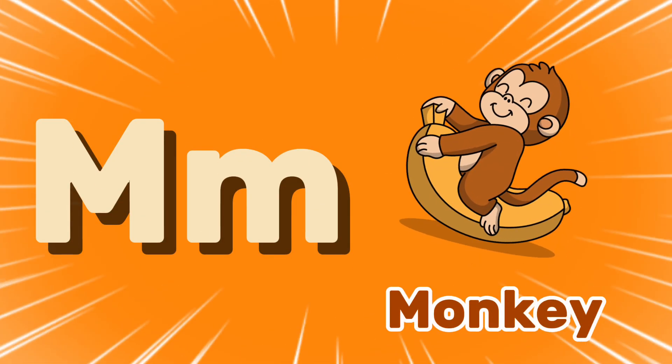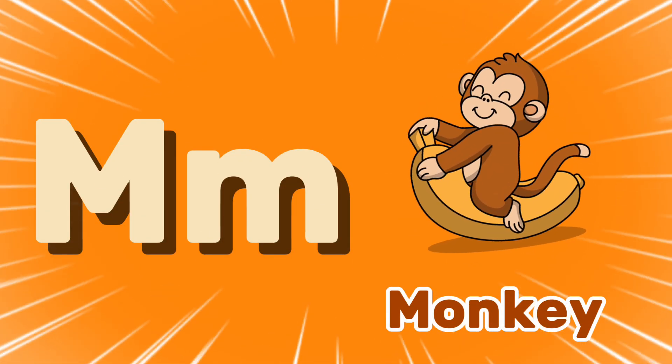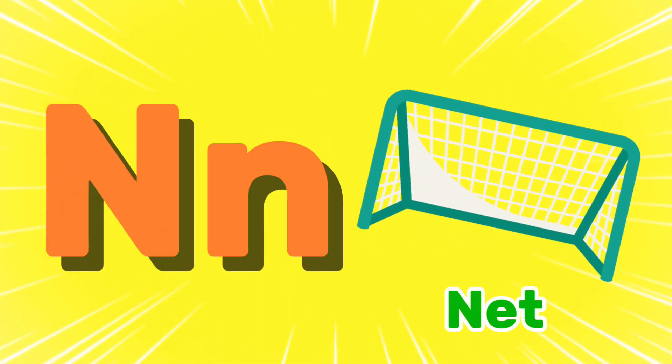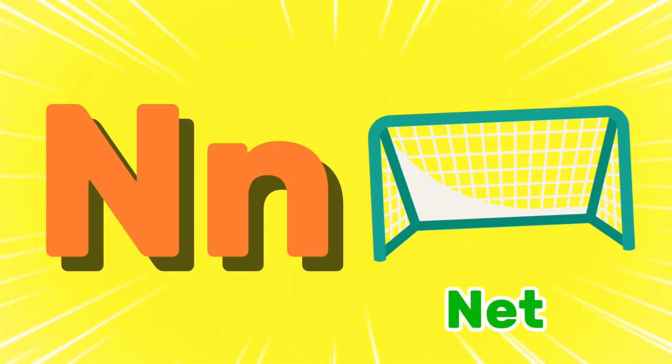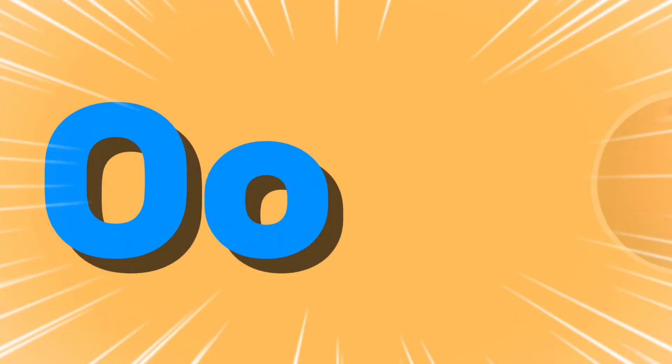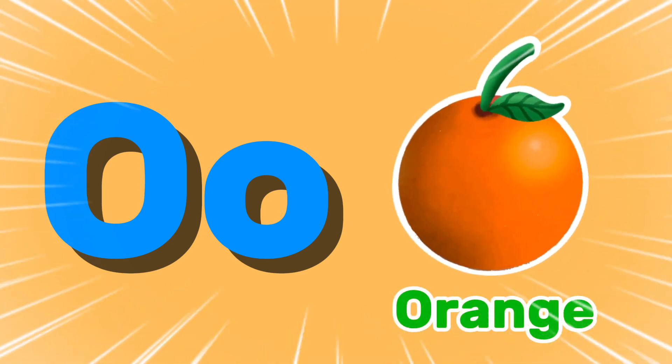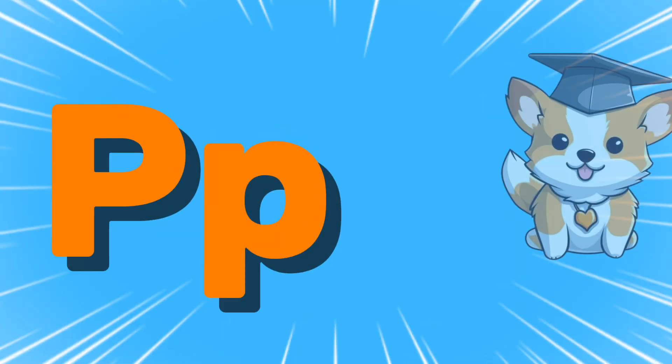M is for monkey. N is for net. O is for orange. P is for pet.